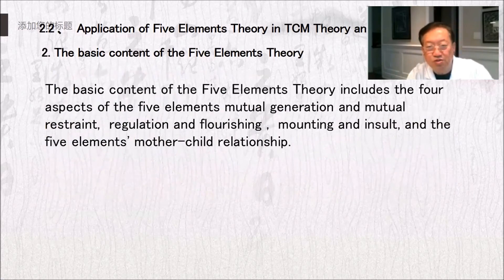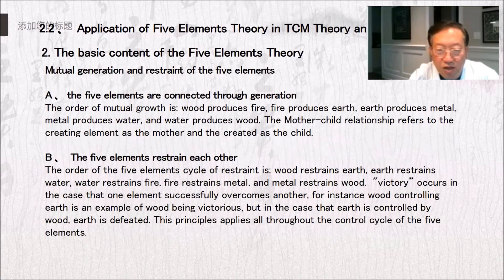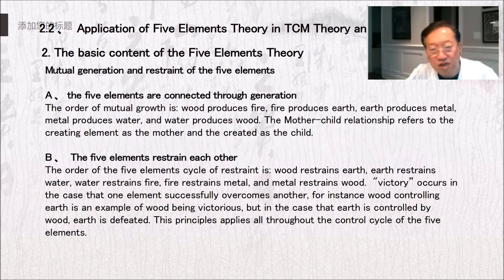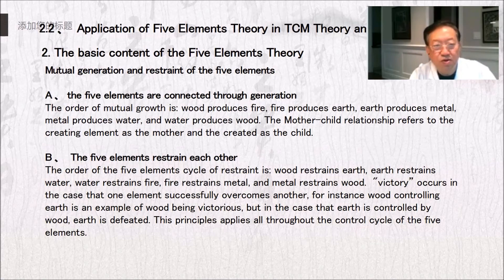The basic content of five elements theory includes four aspects: mutual generation and mutual restraint, regulation and flourishing, mounting and insult, and the five element mother-child relationship. The order of mutual generation is: wood produces fire, fire produces earth, earth produces metal, metal produces water, water produces wood — the creating element is the mother and the created is the child. The order of mutual restraint is: wood restrains earth, earth restrains water, water restrains fire, fire restrains metal, and metal restrains wood. Victory occurs when one element successfully overcomes another — wood controlling earth is an example of wood being victorious, while earth being controlled means earth is defeated.